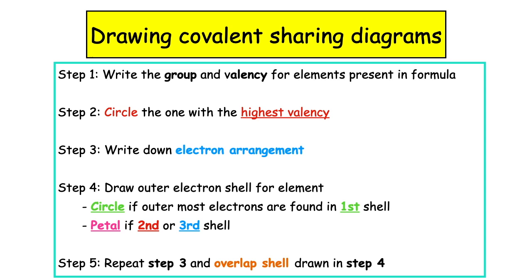Step one: we want to write the group and valency for the elements which are present in the formula. Step two: we want to circle the one with the highest valency. Step three: we then write down the electron arrangement for that element. Step four: we have to draw the correct outer electron shell — remember it's a circle if the outermost electrons are found in the first energy level, and a petal if it is found in the second, third, fourth, or fifth shell.